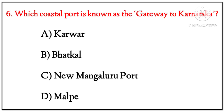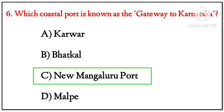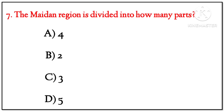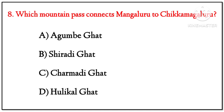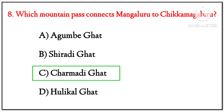Question 6: Which coastal port is known as the gateway to Karnataka? The correct option is C — New Mangaluru Port. Question 7: The Maidan region is divided into how many parts? The correct option is B — two. Question 8: Which mountain pass connects Mangaluru to Chikkamagaluru? The correct option is C — Charmudi Ghat.